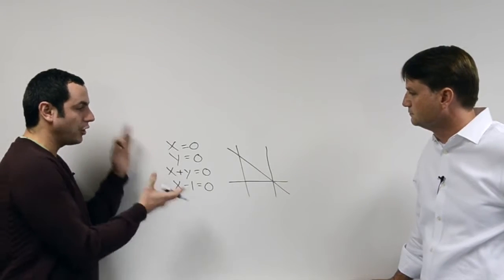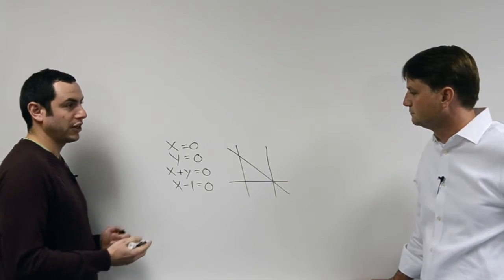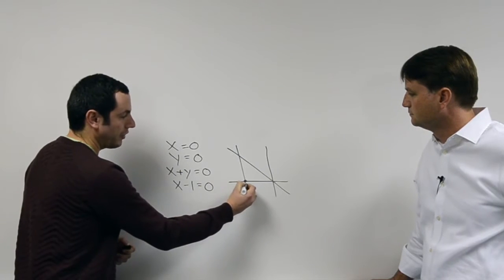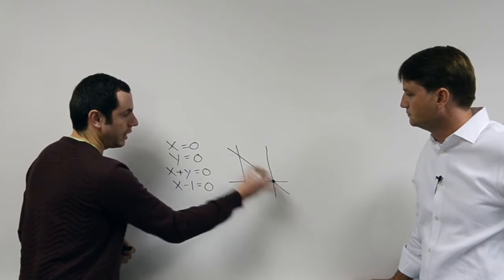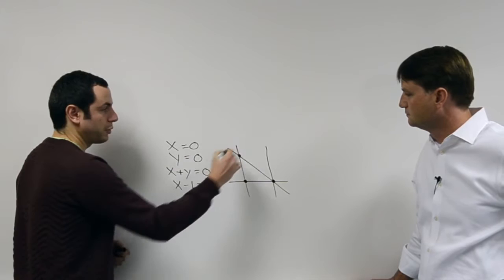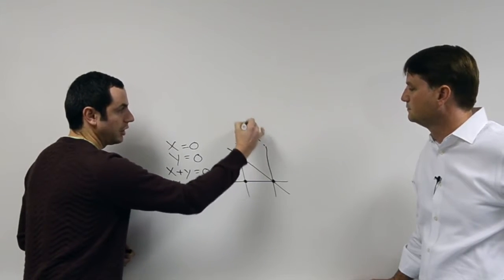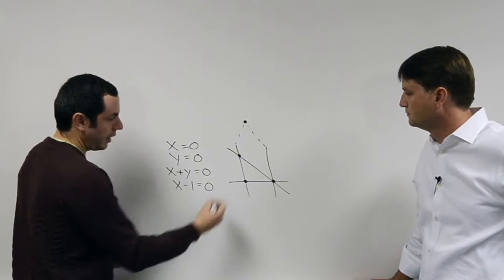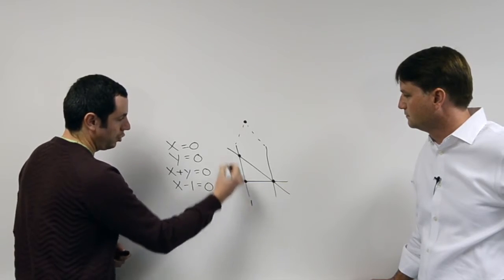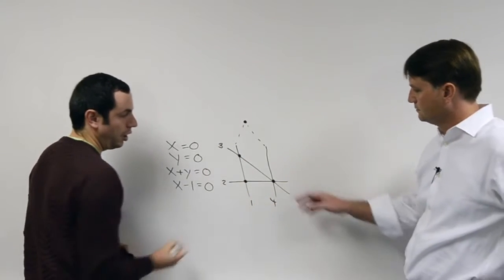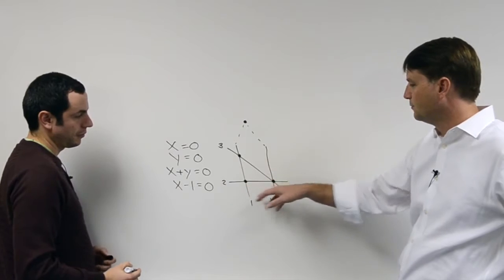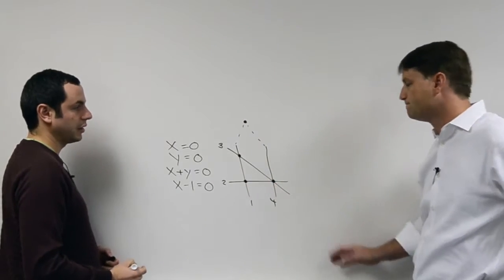Instead of looking at the algebra here, we're going to look at the combinatorics. I'm looking at the intersections of all of these lines, and actually since we're in projective space, these are really going to meet at infinity. And if I label these, for example, 1, 2, 3, and 4. So right here, these are the double points, and there's your triple point. Exactly.